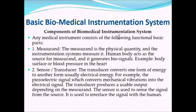The basic components, as mentioned, are: measurand, sensors and transducers, calibration unit, and signal conditioning. The measurand is a physical quantity that the instrument system measures. The human body acts as a source of measurement and generates bio signals — this is called the measurand. Not only humans: if the treatment is for an animal, then that animal will also be considered as the measurand.